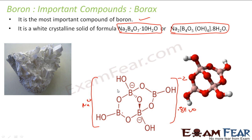These borons have 2 negative charge. Some of the borons are sp2 hybridized and some are sp3 hybridized. The ones with 4 bonds are sp3 hybridized and the ones with 3 bonds are sp2 hybridized. The two borons which are sp3 hybridized carry the negative charge, so overall it has minus 2 negative charge. It is an anion, sodium is the cation, and there are an extra 8 molecules of water.